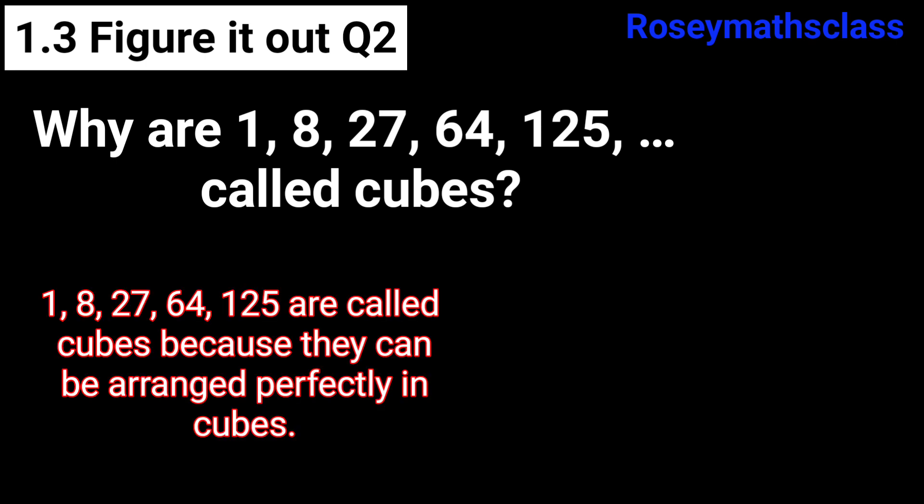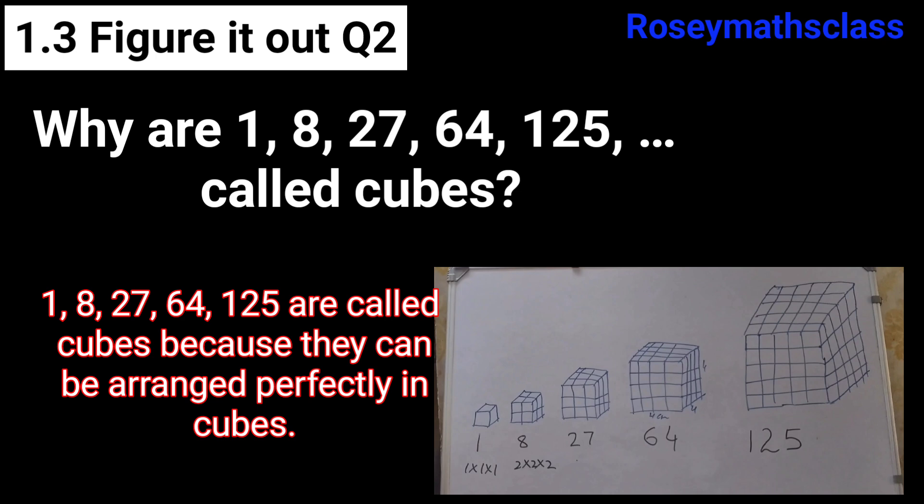These numbers are called cubes because they can be arranged perfectly in the shape of cubes. In a cube, the length, breadth and height are all of equal length.